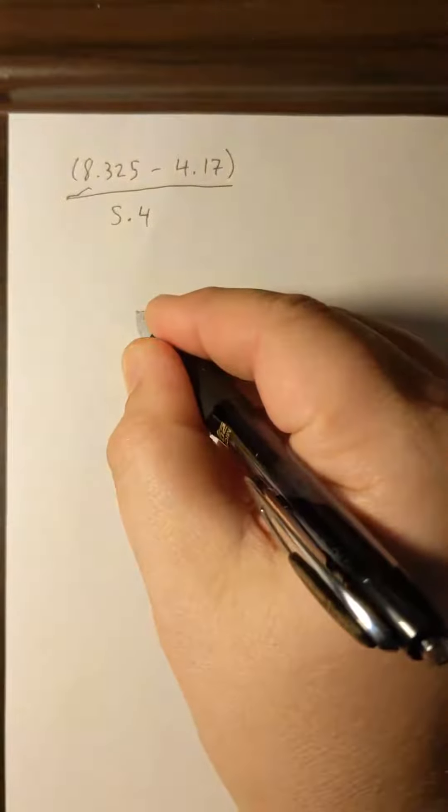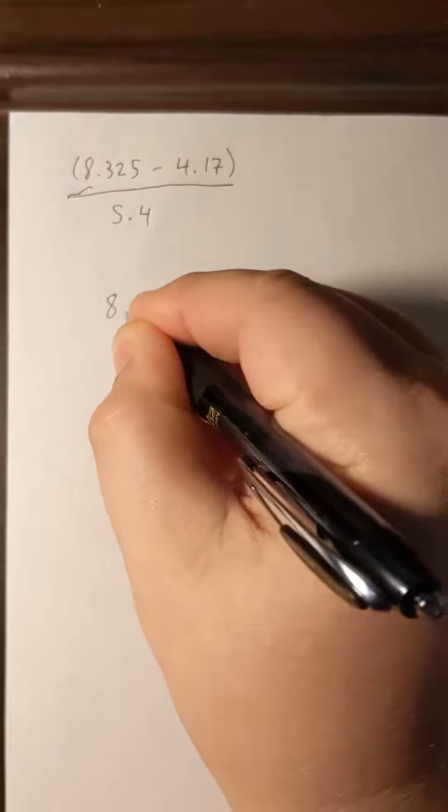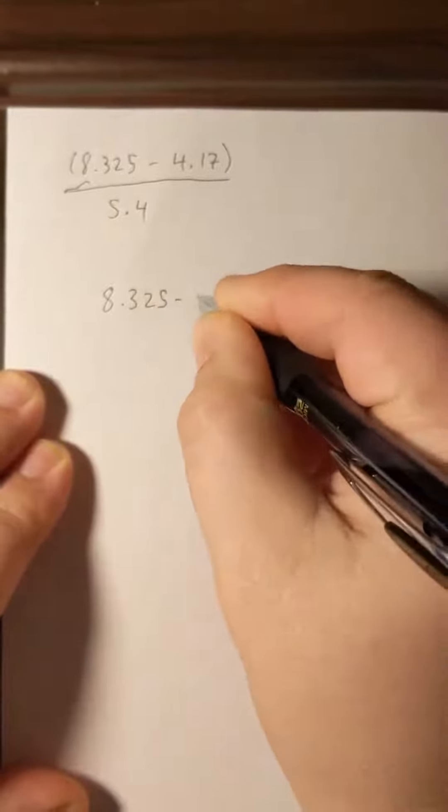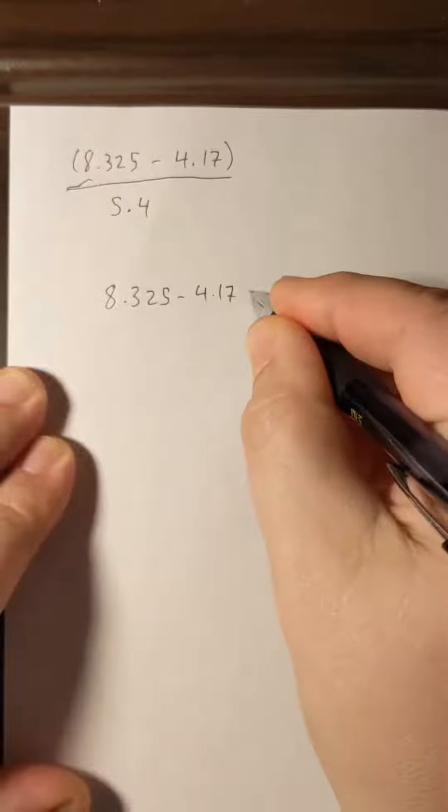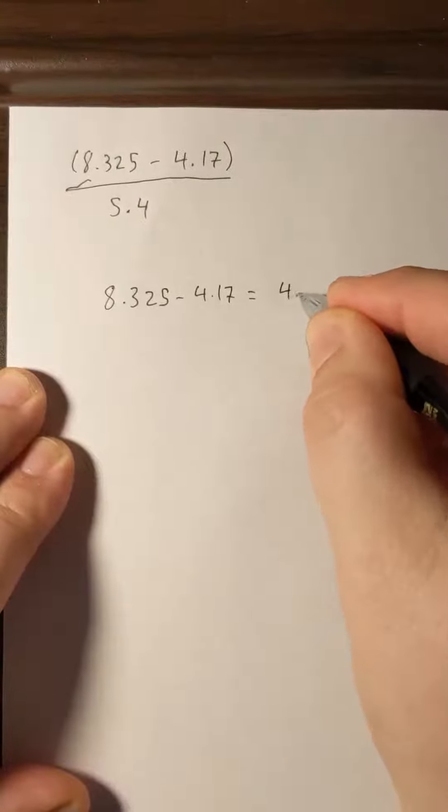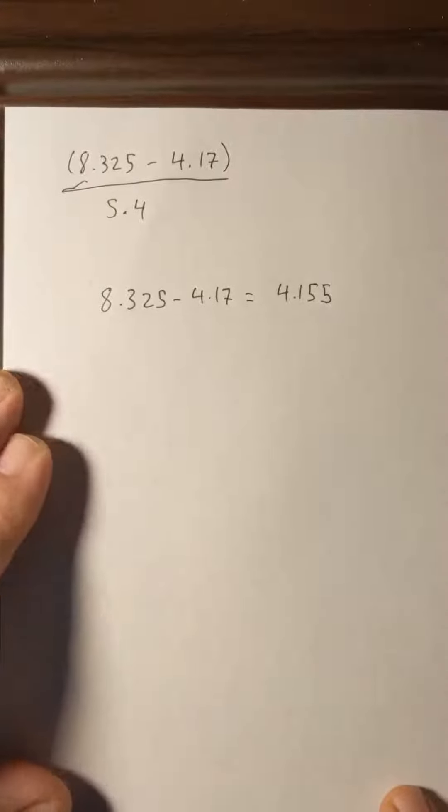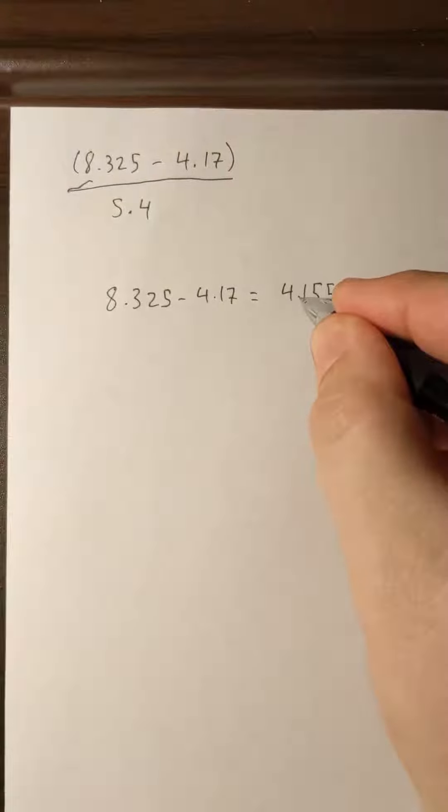Now we need to remember our order of operations, so the first thing we have to do is tackle the subtraction because it's inside of the parentheses. So 8.325 minus 4.17 equals 4.155. This is what our calculator will tell us is our answer, but we're not going to round it off yet for significant figures.